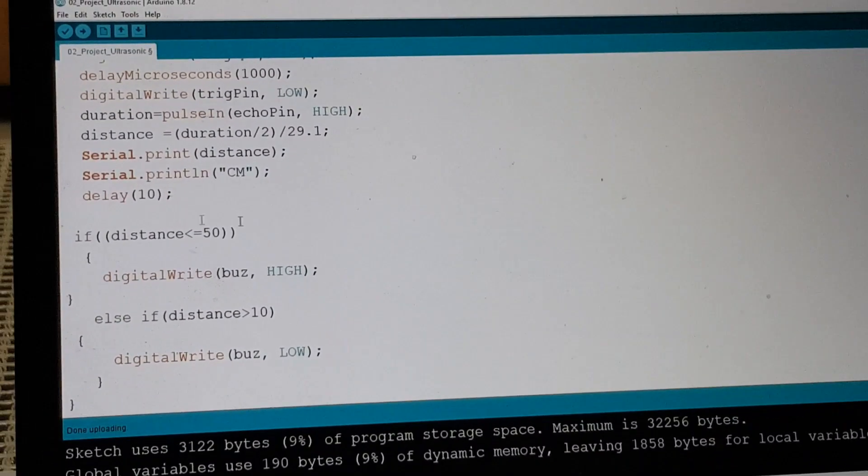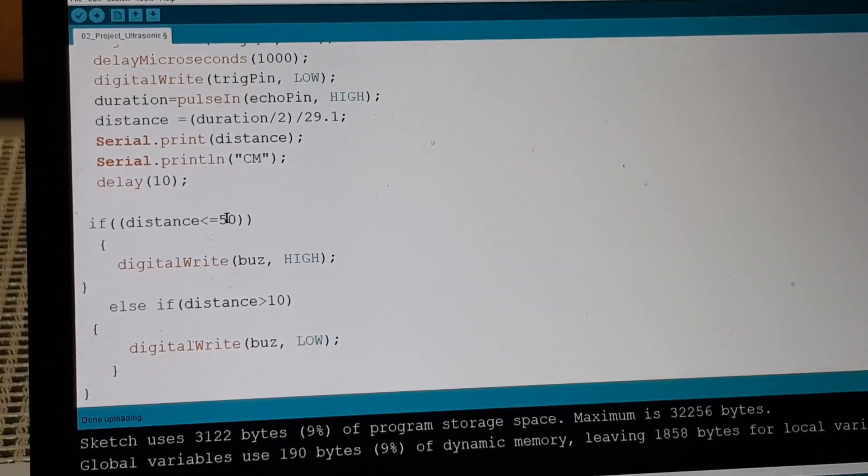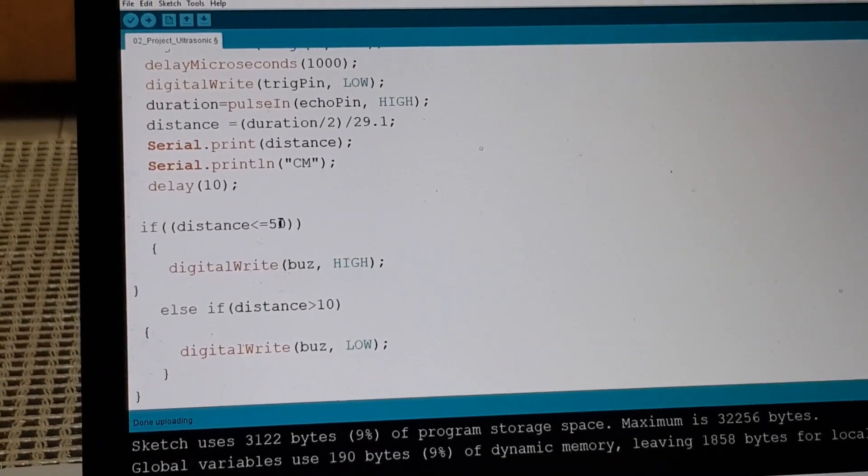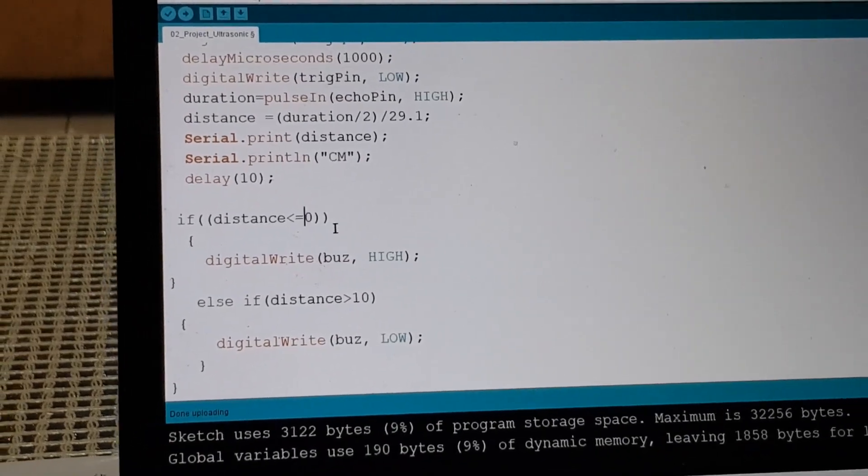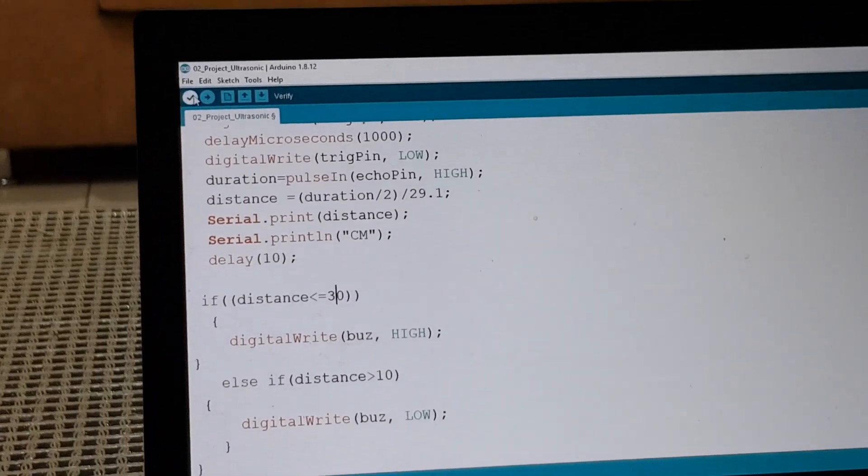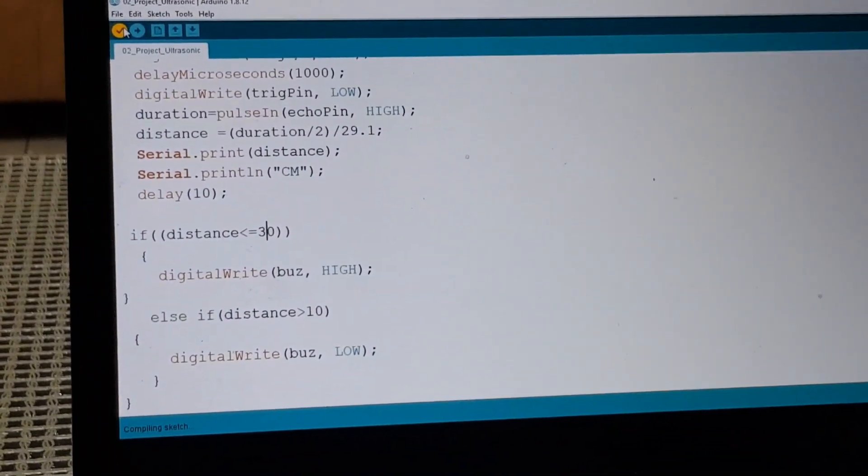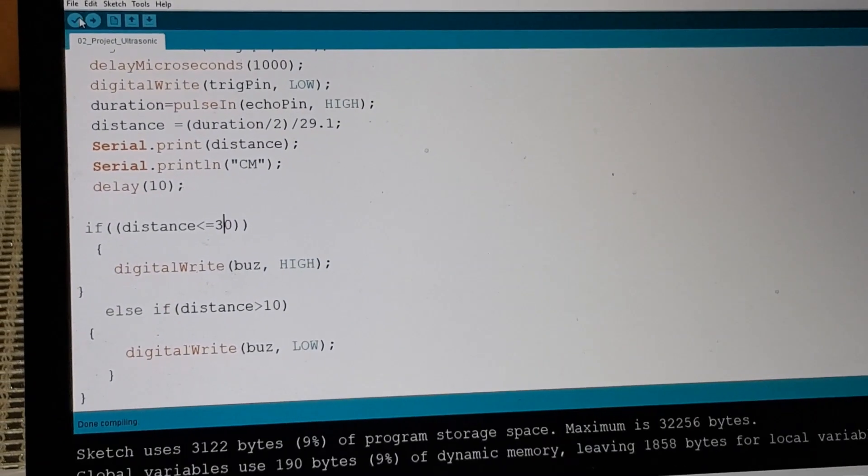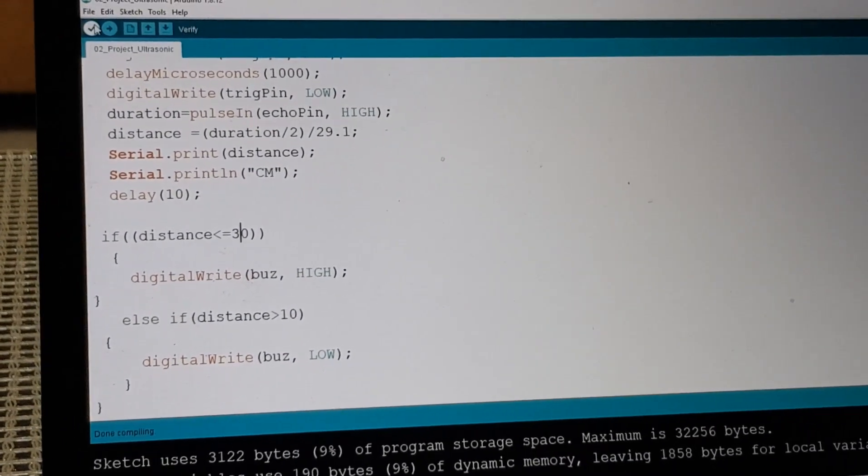Okay, so right now the distance is 50 centimeters. So as I said, we'll make it 30. So we go between 5 and 0, and backspace 3. Okay, let's verify the code. Compiling sketch. When compiling, let's upload it to the Arduino.